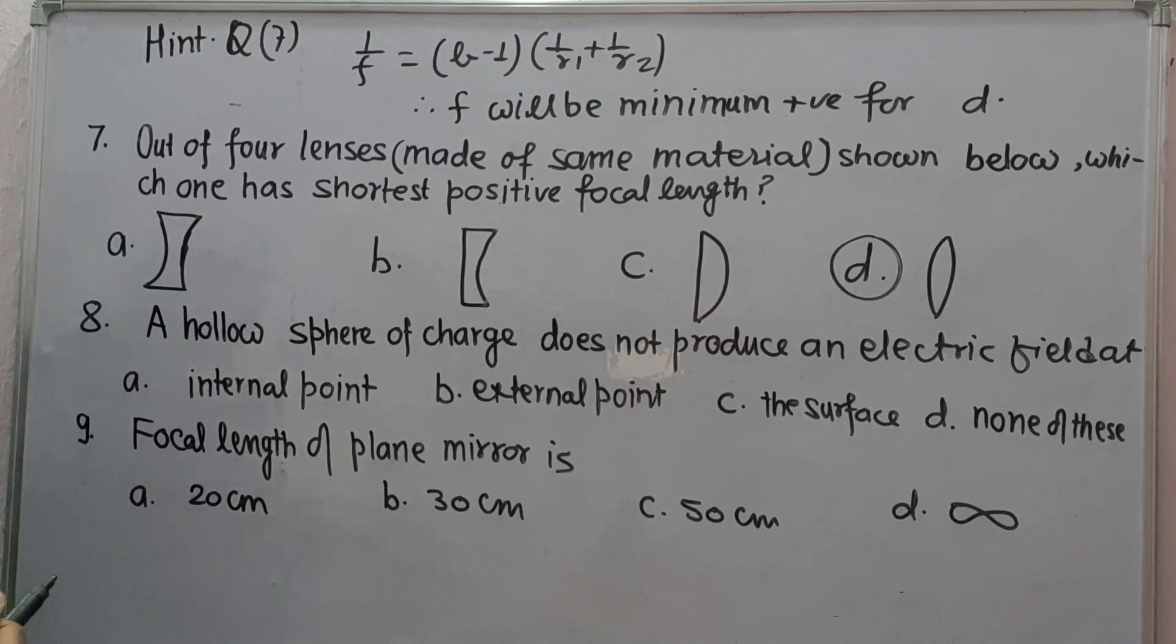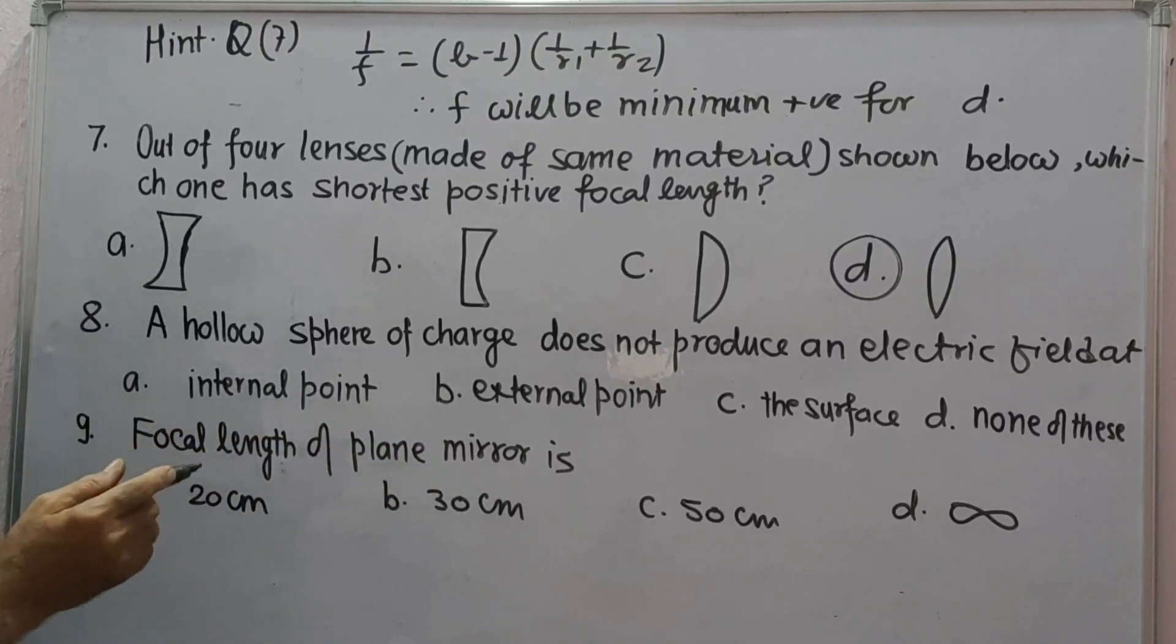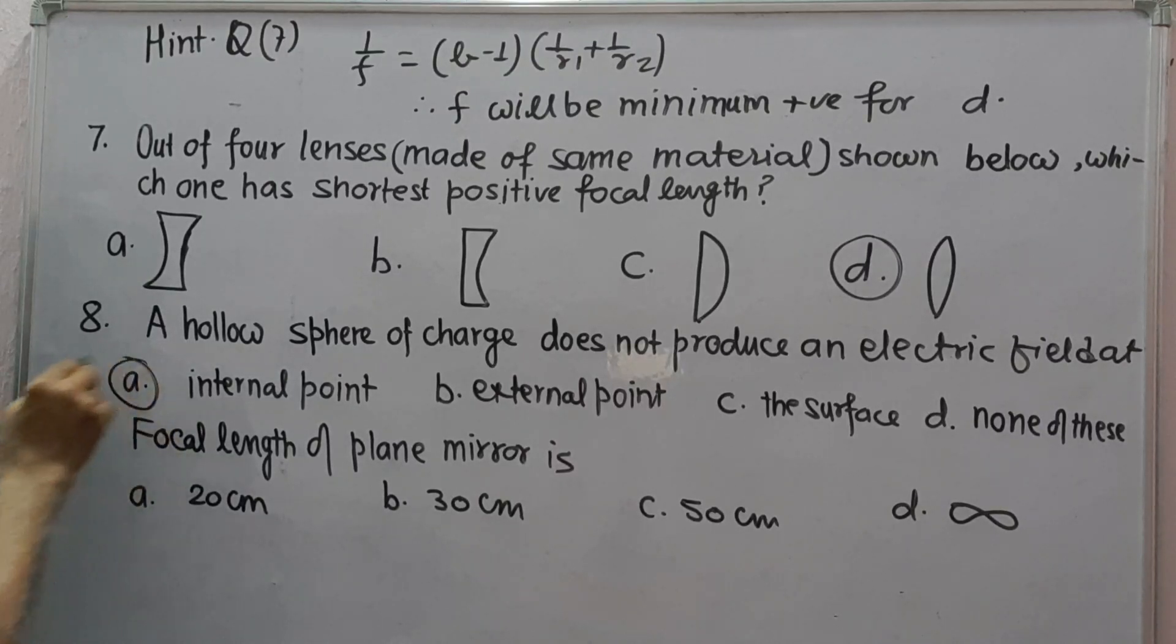Question number 8: a hollow sphere charge does not produce an electric field - these are the options. We know that the electric field inside a charged conductor is always 0, therefore option will be A.